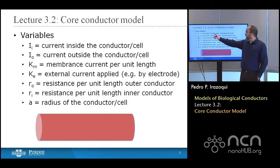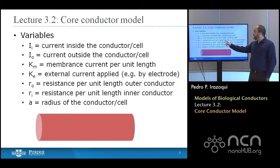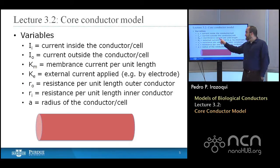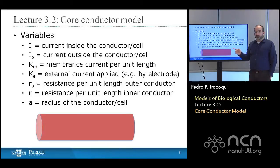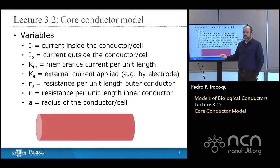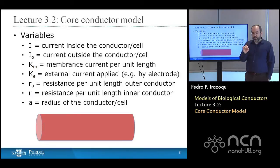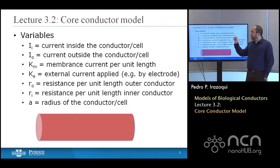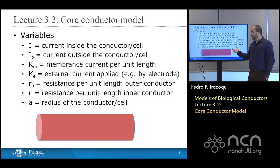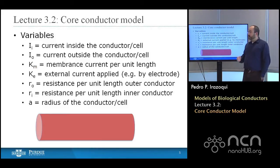We have a number of variables: I sub I is the current inside the conductor or cell; I sub O is the current outside; K sub M is the membrane current; K sub E is a new term — the external current applied per unit length, for example by an electrode, allowing us to simulate electrical stimulation of the neuron. R sub O and R sub I describe the resistance per unit length of the outer and inner conductors respectively. And A will describe the radius — we use A rather than R to avoid confusion between radius and resistance.